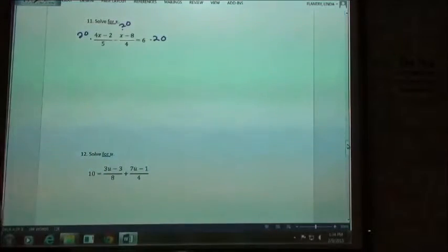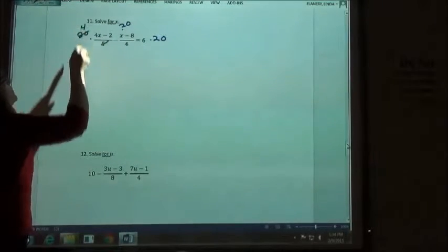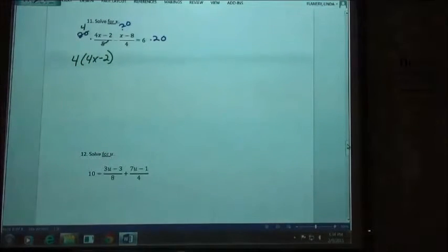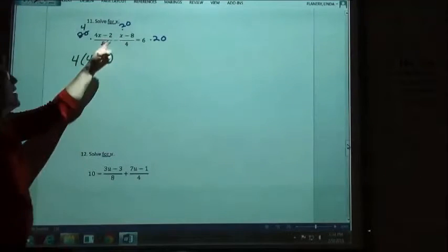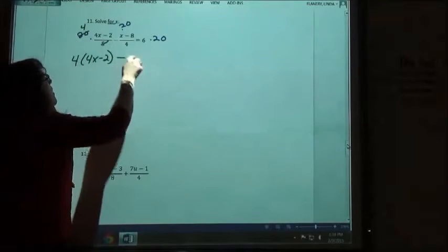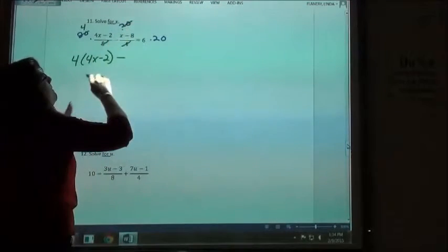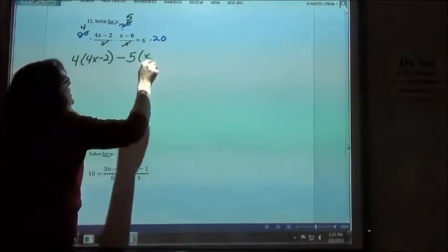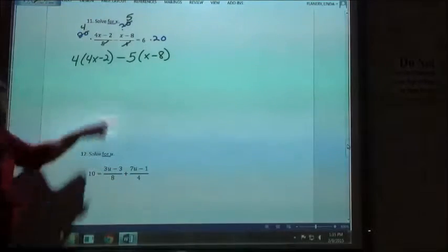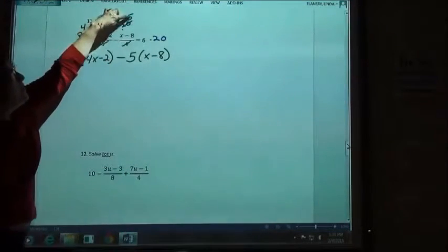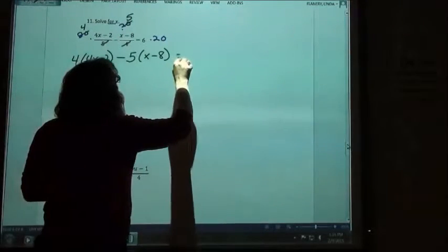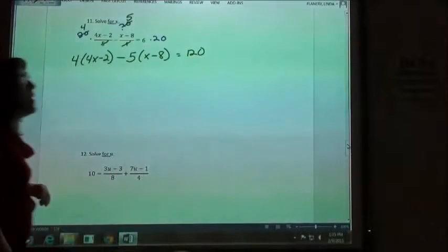And then I'm going to do some canceling. So 5 goes into 20, 4 times. So I'm going to take 4 times that 4x minus 2. Then I have this minus sign. 4 goes into 20, 5 times, so I have minus 5 times x minus 8. So that sign in between came down, and then when I divide it, I have my number there. And on the other side, 6 times 20 must be about 120, right?